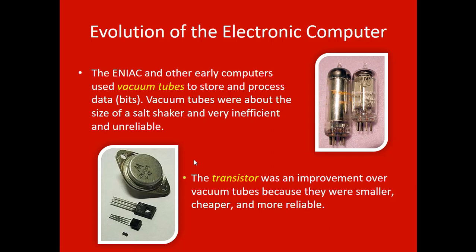We can do so much more with a computer now because all of these transistors are now microscopic — literally microscopic. They started with something the size of your fist, and now you can put billions of them into something the size of your pinky fingernail. It's really amazing. The brain of the ENIAC was running off these vacuum tubes; eventually this very quickly became transistors. Those transistors shrank, and now we can put lots and lots of transistors into the processors of our computers.